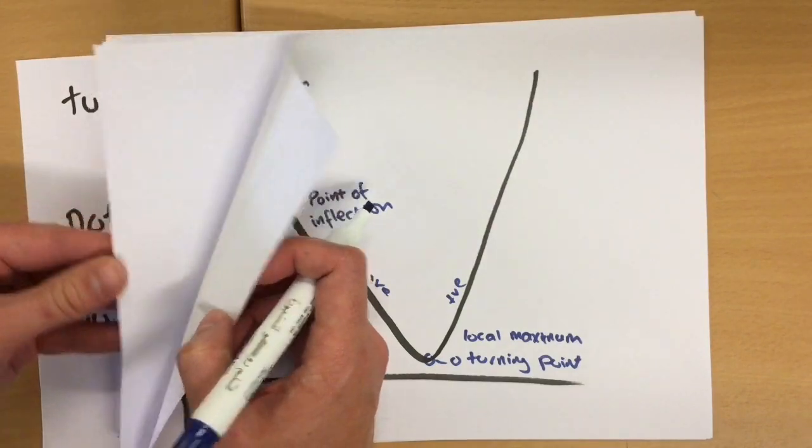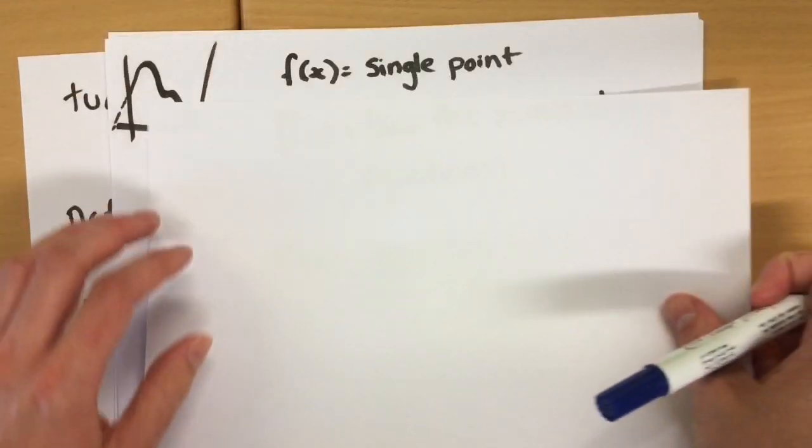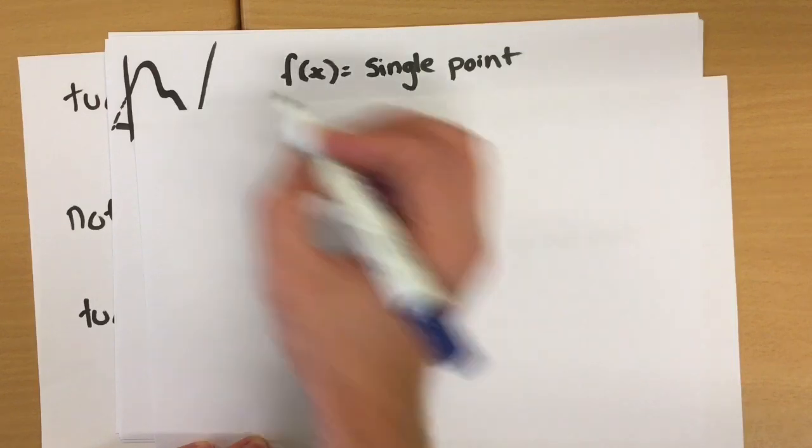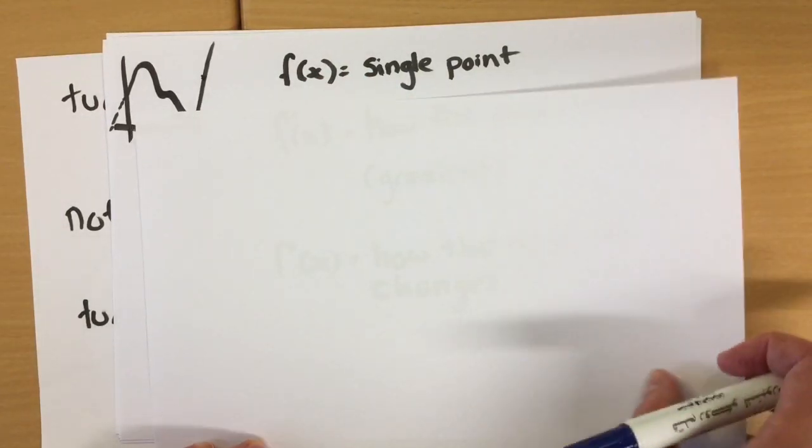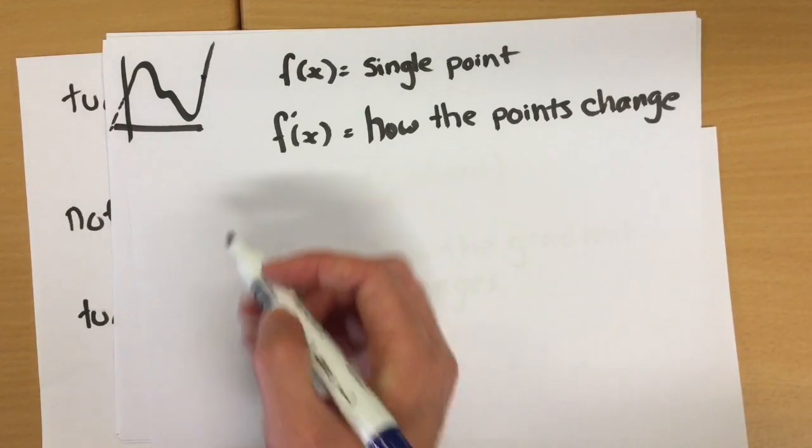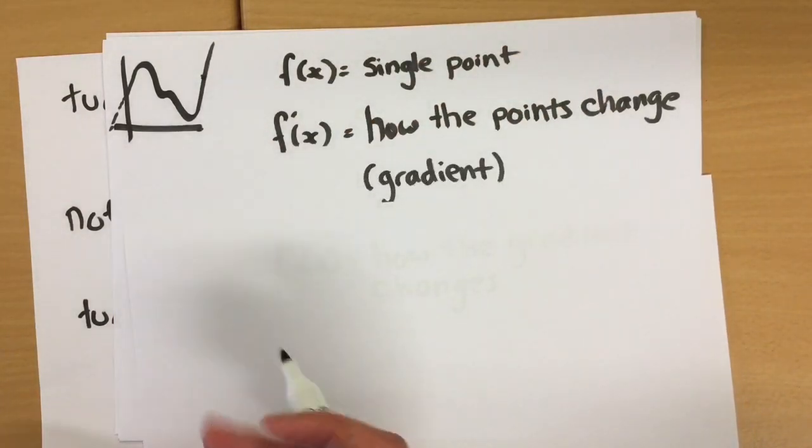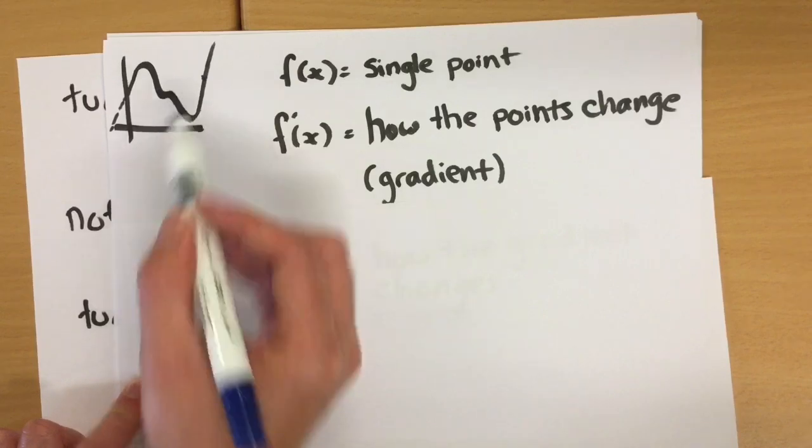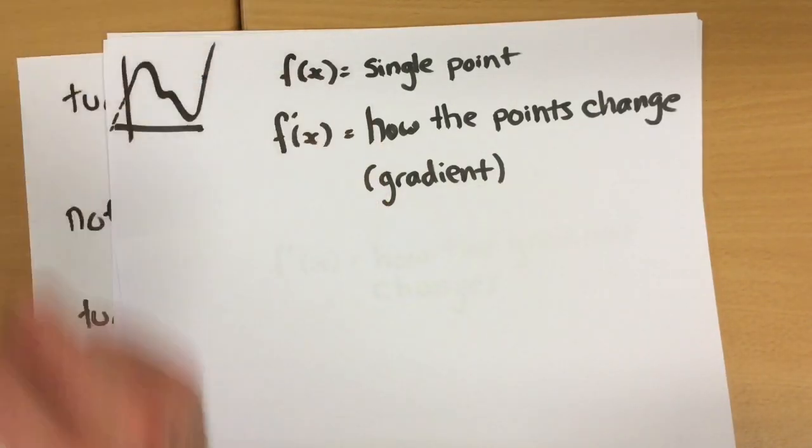Now, we've seen before that a normal function tells us about a single point on the graph. So at any random point, it will tell you the coordinates of that point. You've also seen the first derivative. That's describing how the points are changing around this point, in which case it's called a gradient. Is it increasing? Is it decreasing? Is it going flat? What's going on? Or in fact, is it just at a zero point?